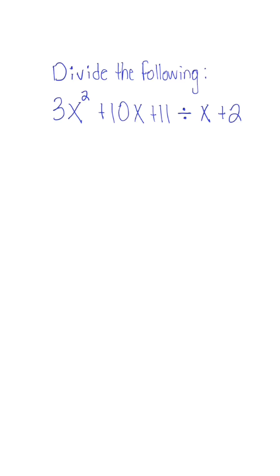We're going to use synthetic division to divide this polynomial expression. So after we do our first step of setting our divisor equal to zero, we're going to get x is equal to negative two.